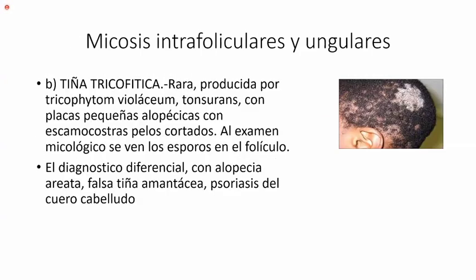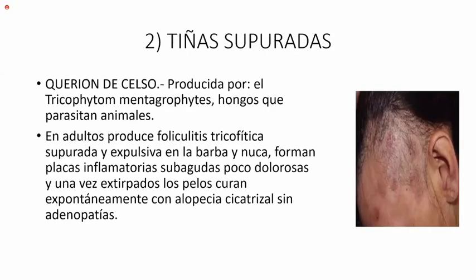La tiña tricofítica, que es rara, producida por el Trichophyton violaceum. Tonsurante, con placas pequeñas alopécicas con escamocostras y pelos cortados, pero estos a distinto nivel. Al examen micológico se ven los esporos en el folículo. El diagnóstico diferencial con alopecia areata, falsa tiña amantácea, psoriasis del cuero cabelludo.